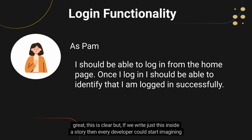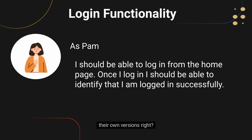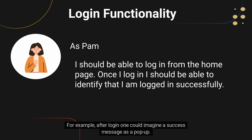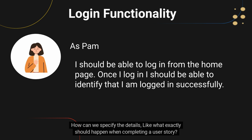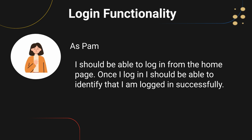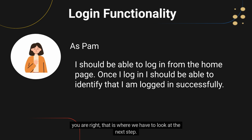This is clear, but if we write just this inside a story, then every developer could start imagining their own versions, right? For example, after login, one could imagine a success message as a pop-up, and the other could imagine it as a status change on the top right side. How can we specify the details — like what exactly should happen when completing a user story? That is where we have to look at the next step: the how.